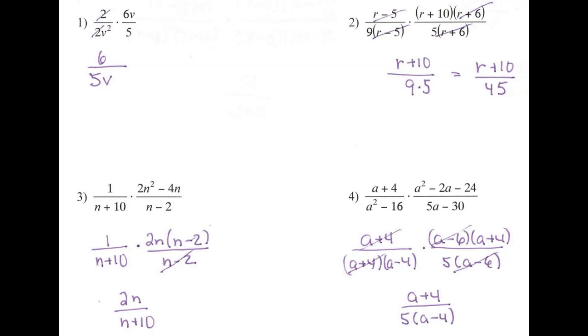We're going to look at multiplying and dividing rational expressions. The key to this is to get everything factored and to use canceling to your advantage.